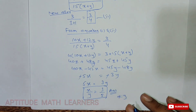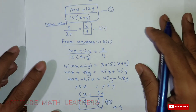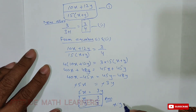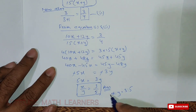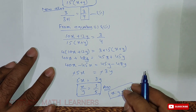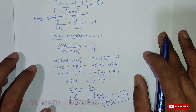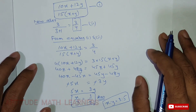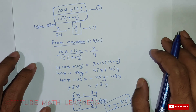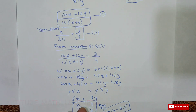We took X and Y, mixed both alloys, and got the answer: the ratio is 3:5. So the two alloys should be mixed in the ratio 3:5. Hope you have understood the question. If you like the method, please subscribe to our channel Aptitude Math Learner to get more new questions. Thank you very much.